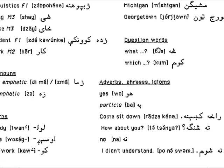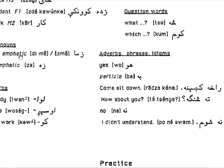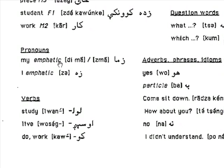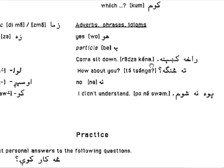Question words: 'sa' means 'what,' 'kum' means 'which.' 'Zma' means 'my' — similar to English 'my,' and there is likely a historical linguistic connection. 'Ze' is the emphatic strong pronoun 'I.' Adverbs phrases and idioms: 'woa' means 'yes,' 'ba' is a particle to be discussed in future units.